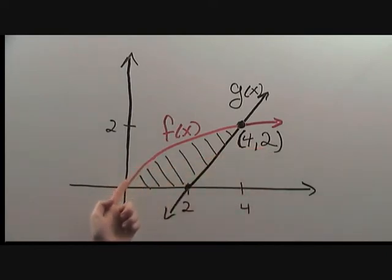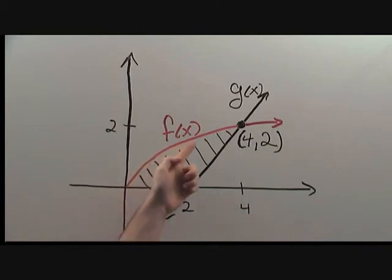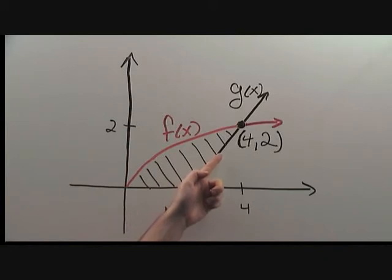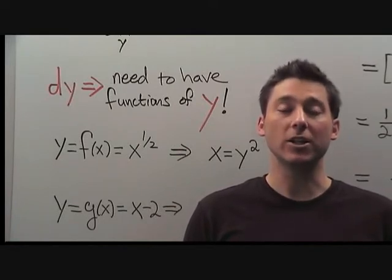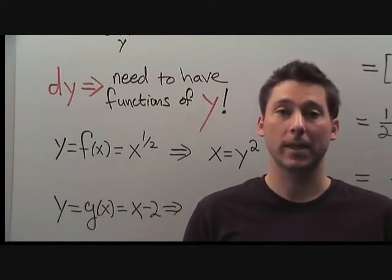The left function is always the red one, which is f(x), and the right function is always the black one, which is g(x). One very important thing to remember is that when you use dy, you need functions of y. We were given functions of x, so let's go rewrite them.